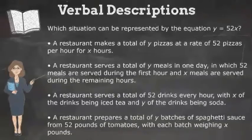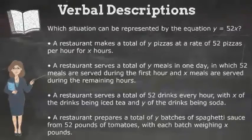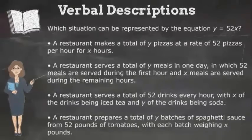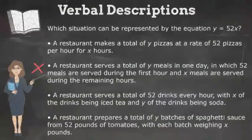A restaurant serves a total of y meals in one day, in which 52 meals are served during the first hour, and x meals are served during the remaining hours. In this answer choice, 52 isn't a rate anymore. It's just a one-time number, as 52 meals were served just during the first hour. So we can eliminate this answer choice.